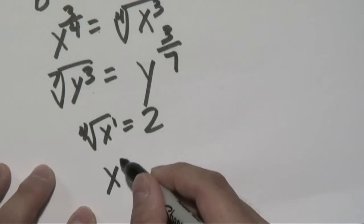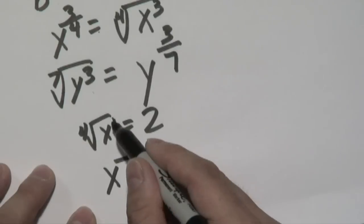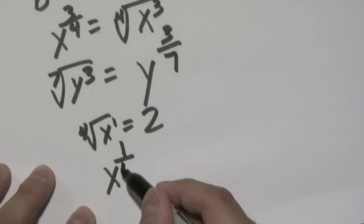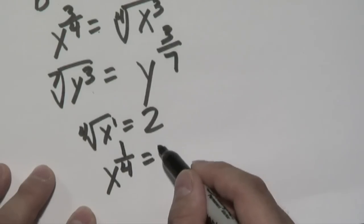So for example, this will be x to the, again like we talked about before, what's inside is your numerator, and what's outside is in the denominator, and that's going to equal to 2.